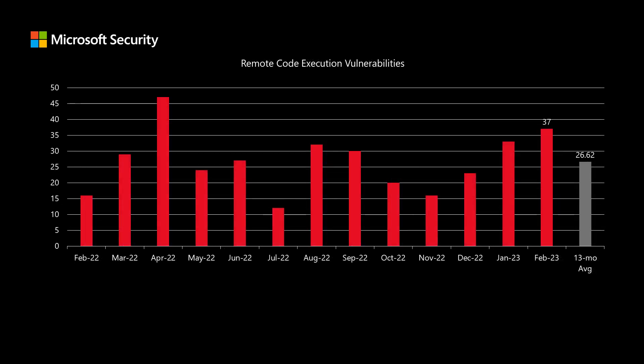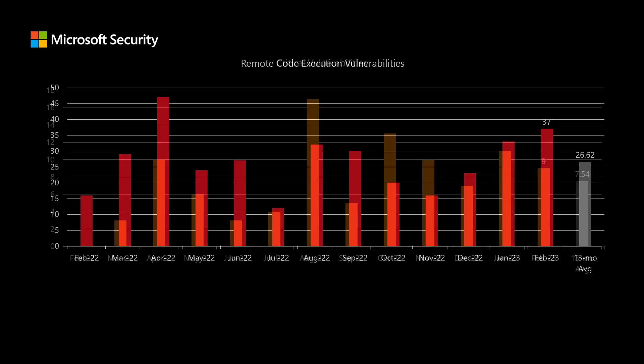Next I'll talk about remote code execution vulnerabilities. These are the ones that typically from an impact perspective have the most risk — they would allow a threat actor to install software and perform other similar tasks. We've been averaging almost 27 per month, and this month we have 37 total remote code execution vulnerabilities, so a little bit above average.